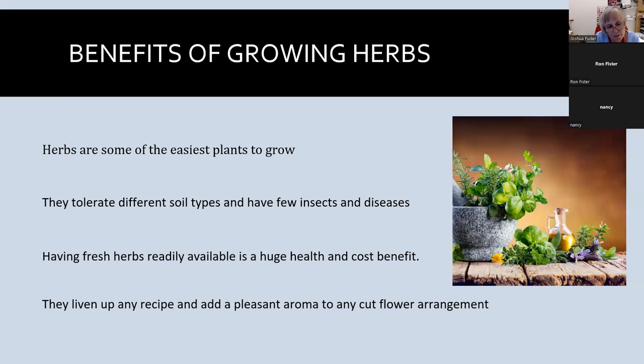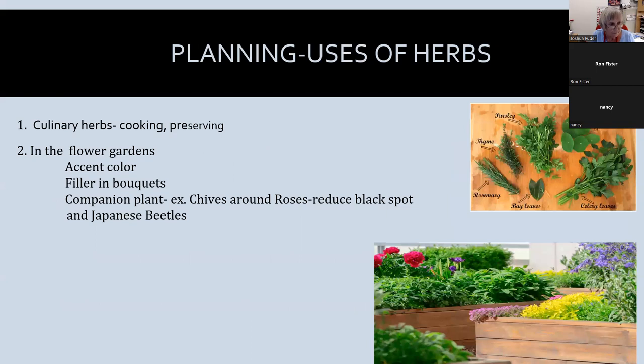Hummingbirds love borage and they also love pineapple mint — they love that red flower on pineapple mint. Most of us are probably going to use herbs for culinary purposes — cooking and preserving. There are so many ways to use them: you can make oils, butters, salts, jams and jellies, mock cocktails, breads — a plethora of things.